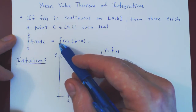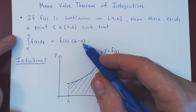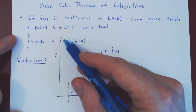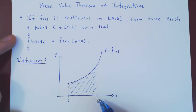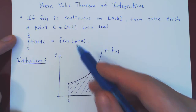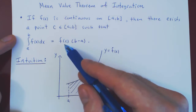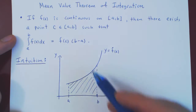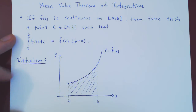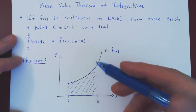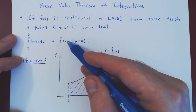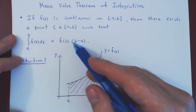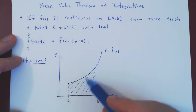Now, how can we make sense of the right-hand side geometrically? We have simply a product of two numbers: f of c times b minus a. But b minus a is the length of our interval. If you think of this as the area of a rectangle — which is base times height — b minus a is the length of our base, so f of c would have to be the height of our rectangle. And you can imagine that if you choose the value of c just right, the area of the rectangle will be exactly the area of this region.